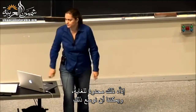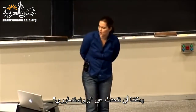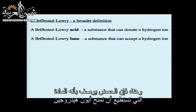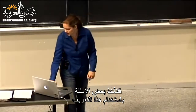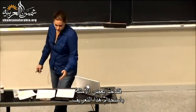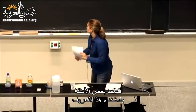We can be broader and talk about Bronsted-Lowry. Here, an acid is described as a substance that can donate a hydrogen ion, and a base is described as a substance that can accept a hydrogen ion. Let's look at some examples using that definition.